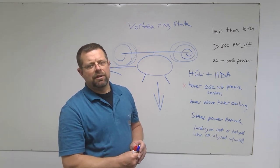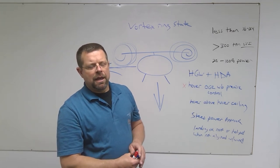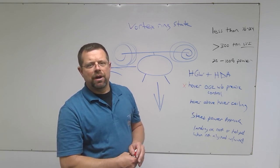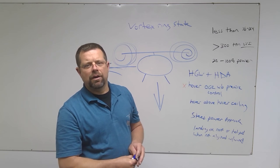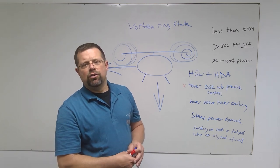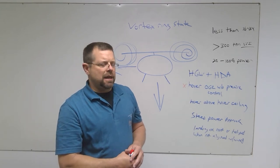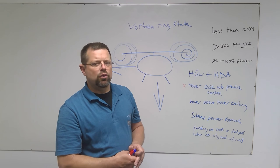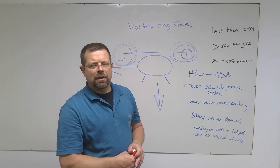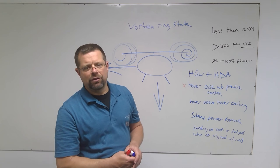And you lift up on the collective. The helicopter recovers after losing very little altitude, and this method would be the method of choice for somebody operating low to the ground where the traditional recovery would not allow you to lower collective some and get forward speed. Now if you were operating a helicopter with a clockwise rotating system, such as a Rotorway or a Enstrom, it would be just the opposite. You would actually push on the right pedal and go left cyclic and lift up on the collective to move the helicopter over into clean air.